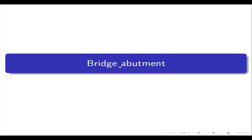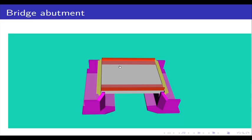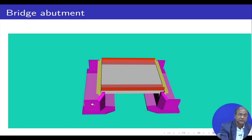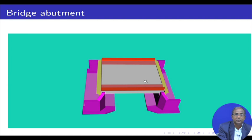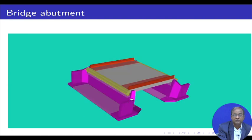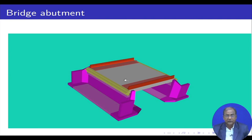Whenever we are talking about the bridge abutment, this figure is relevant. This is supported — that means whatever we have designed so far, we have designed this portion. Now we would like to find out from another view the different components.